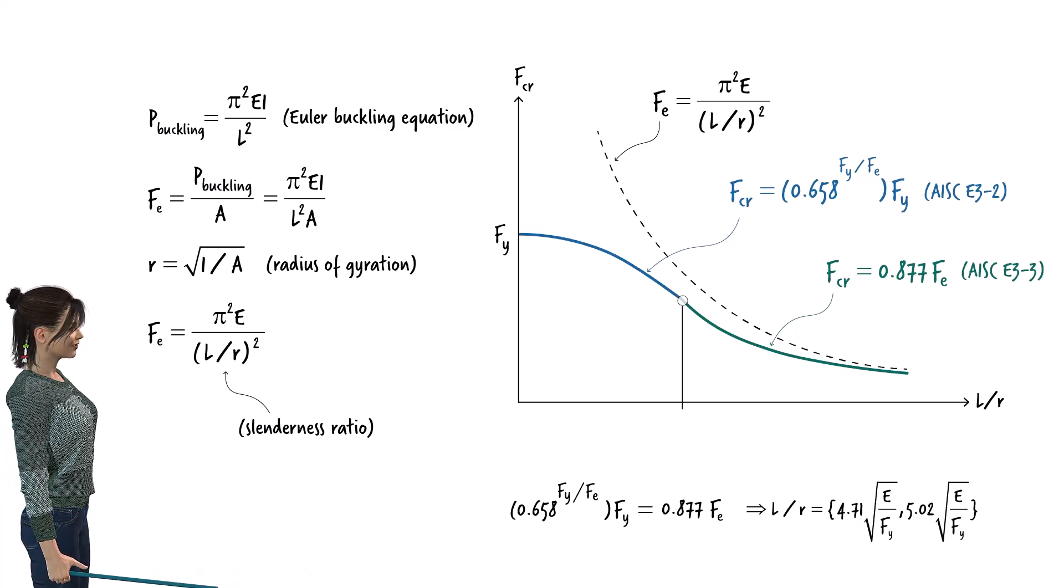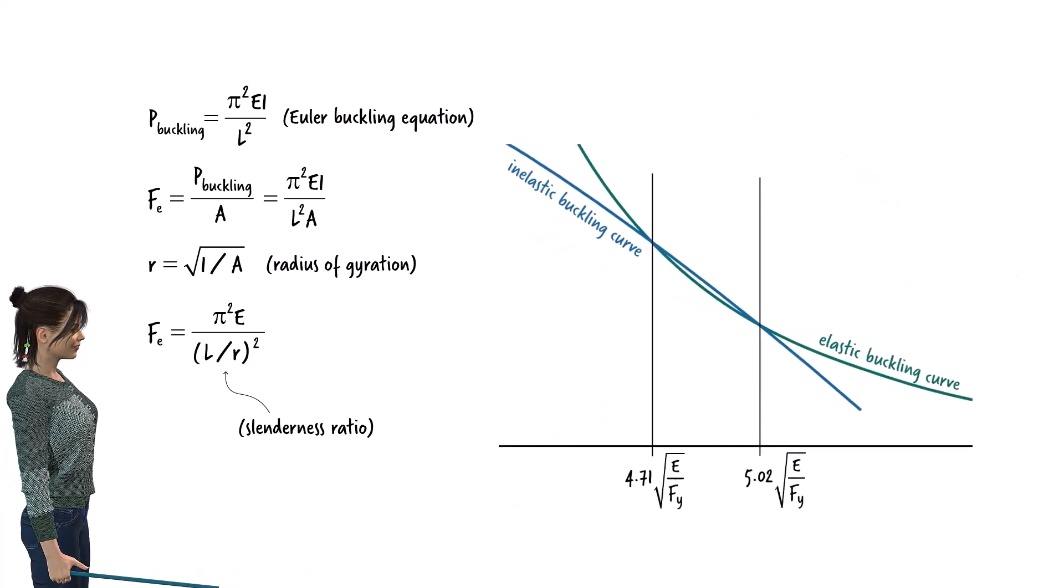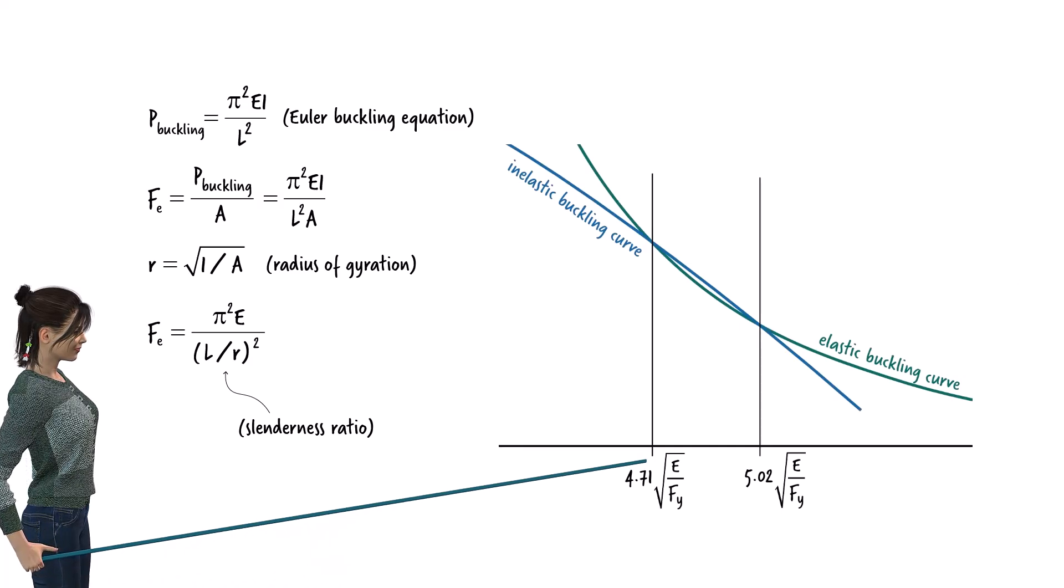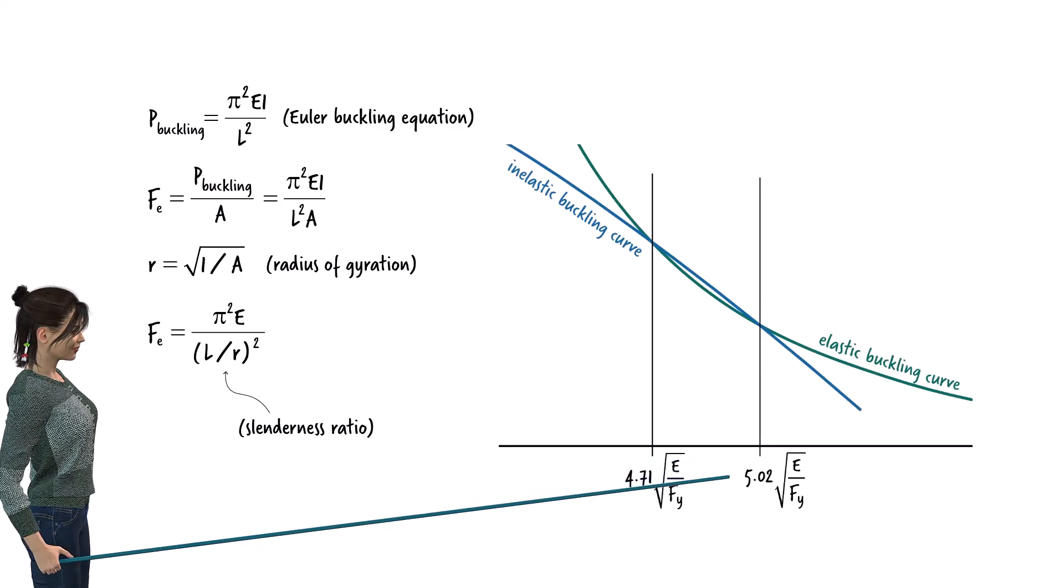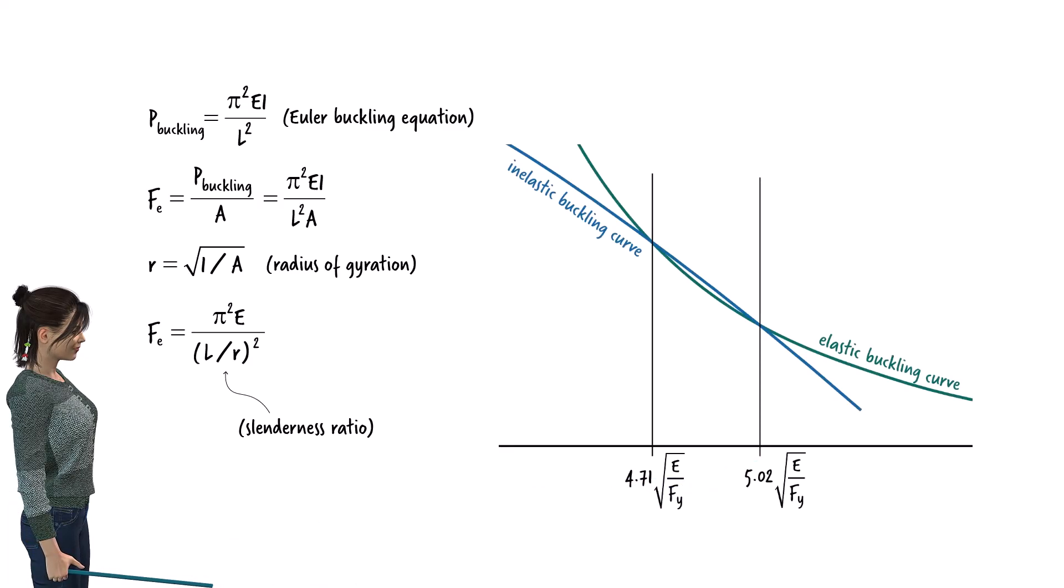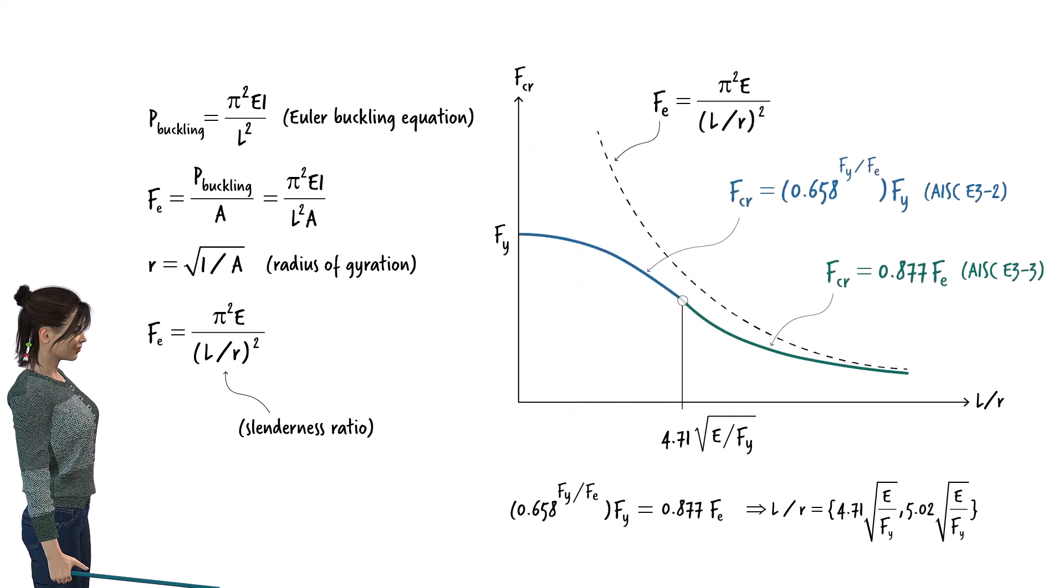A close examination of the elastic and inelastic curves reveals two intersection points. The two curves intersect at 4.71 times the square root of E over F-Y and 5.02 times the square root of E over F-Y. AISC uses the smaller value as the bifurcation point between the two curves.